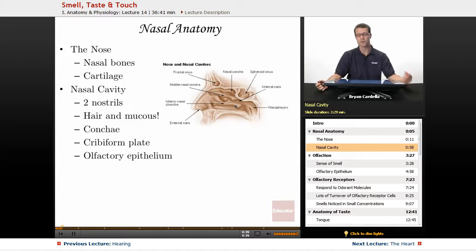The nasal cavity itself, of course, there's two nostrils that lead into the nasal conchae. Within those nostrils, you're going to have hair and mucus. The hair serves a purpose. Similar to the ear canal, the hair is trapping dirt, particles from going in deeper. It's minimizing the chances that you're going to get some kind of infection in the upper respiratory tract.